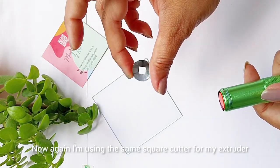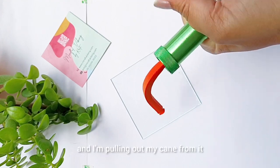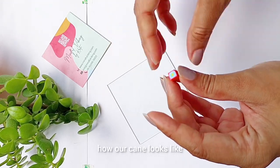Now again, I am using the same square cutter for my extruder and I am pulling out my cane. And let's cut it out to see how our cane looks like.